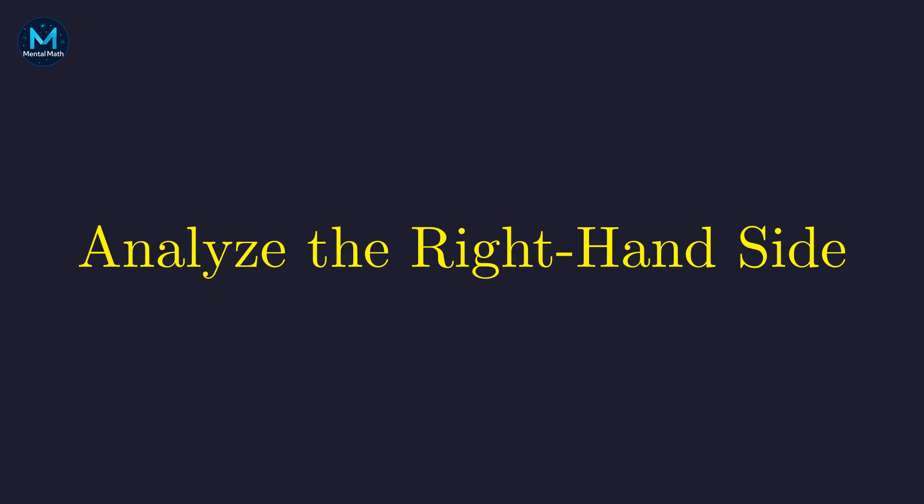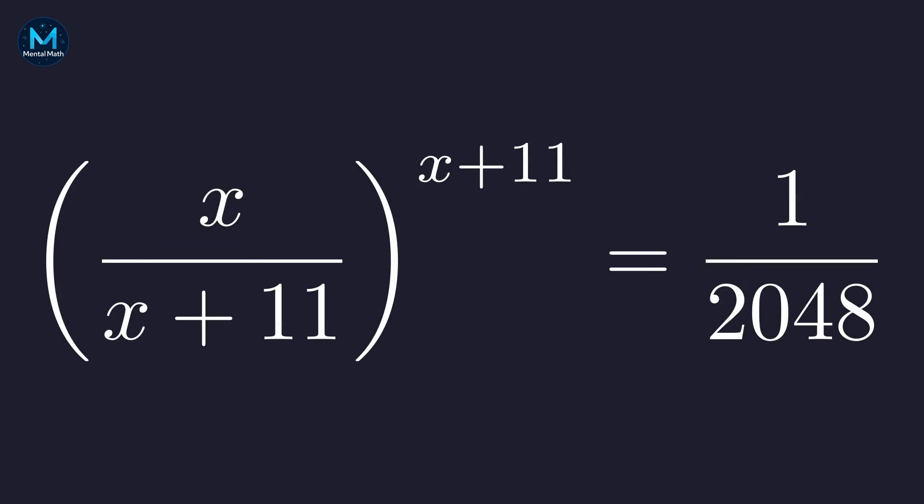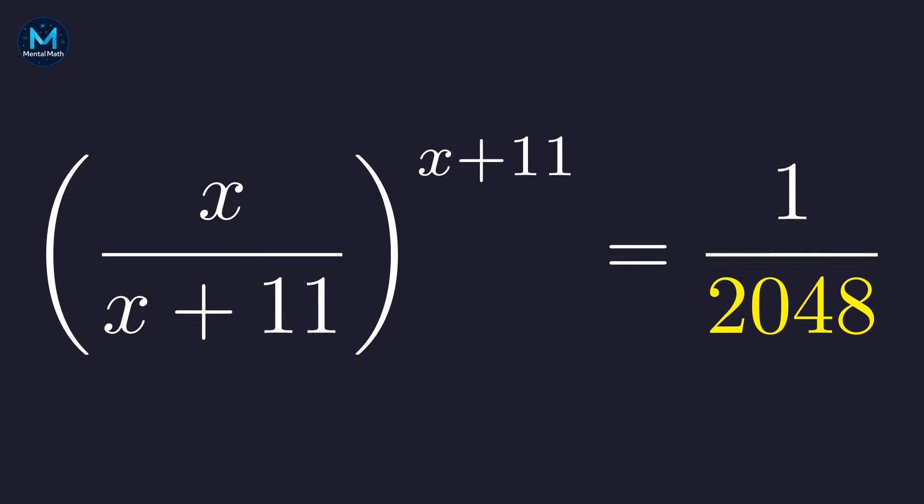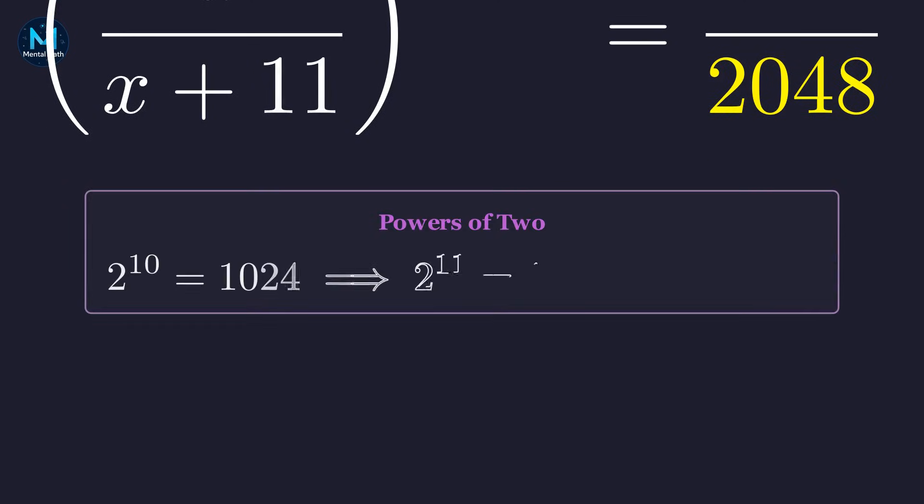The key to cracking this problem is hidden in that number on the right side. Let's look at 2048. In problems like this, numbers aren't chosen randomly. They're usually perfect powers. And sure enough, 2048 is a power of 2. A useful benchmark to remember: 2 to the 10th is 1024. So 2 to the 11th is just double that, which gives us 2048.